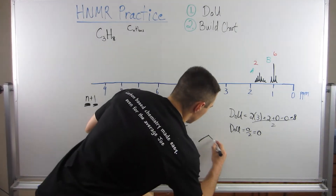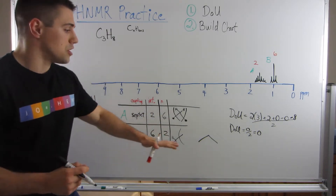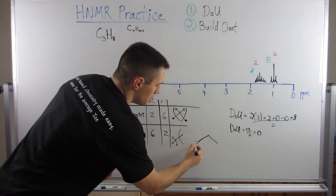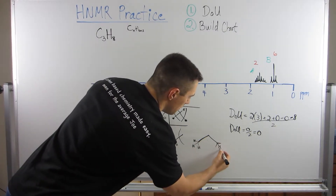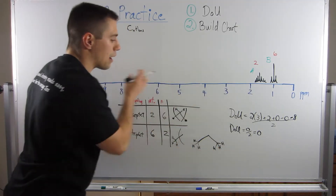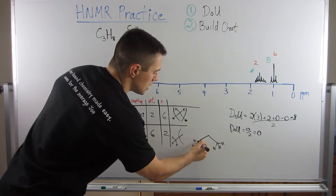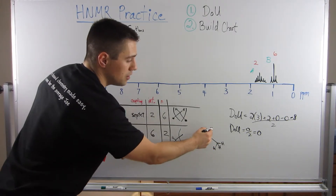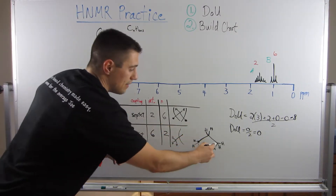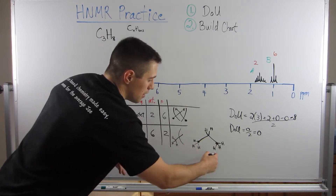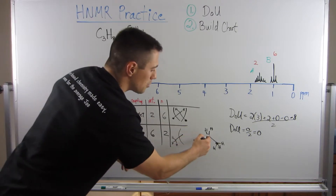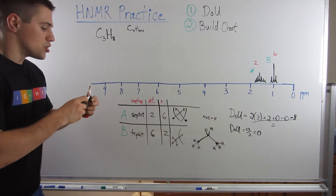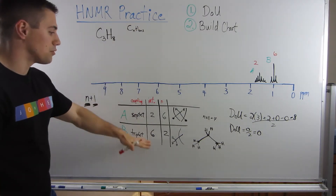From this information we can draw the structure. We have two terminal methyl groups, no electronegative atom to push things downfield. The CH3 groups have two neighbors, giving a triplet — n+1 = 3. The middle CH2 has six neighbors — n+1 = 7, a septet. The structure is propane, and everything checks out perfectly.